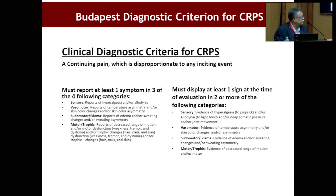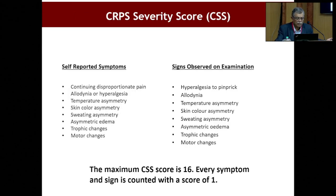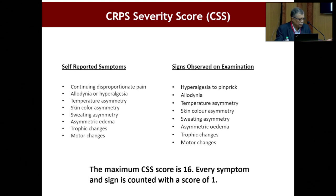The diagnostic criteria require at least one symptom from sensory, vasomotor, sudomotor, motor, or trophic categories, and at least one sign on examination such as allodynia, temperature differences, or decreased range of motion. These are self-reported symptoms and signs observed on examination. A score of 16 indicates a patient who has complex regional pain syndrome.